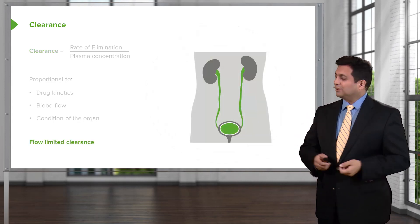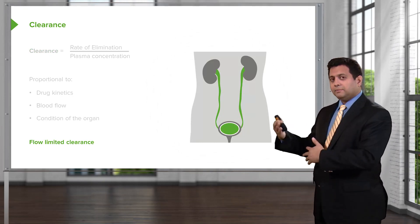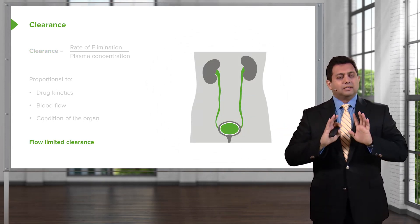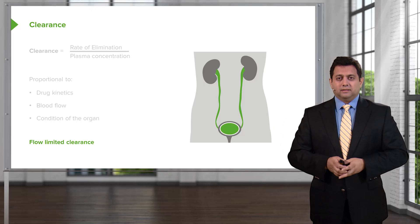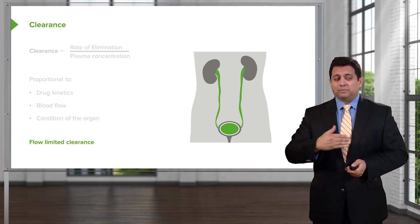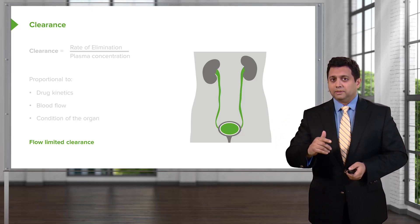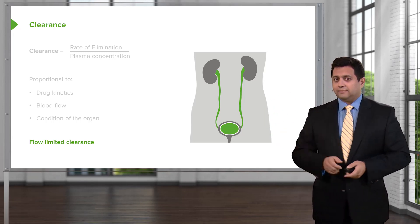I want to also discuss something called flow-limited clearance. So here we have a picture of the kidneys. The kidneys are a classic example of flow-limited clearance. Remember that we have about 180 liters of blood pumping through that kidney every single day.